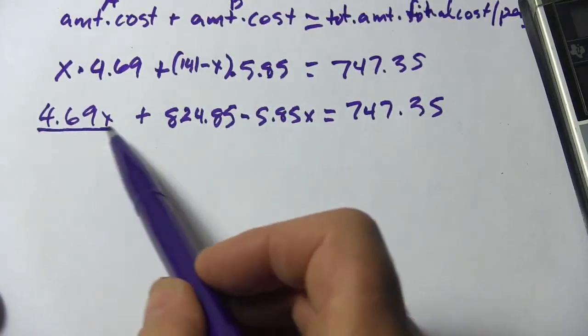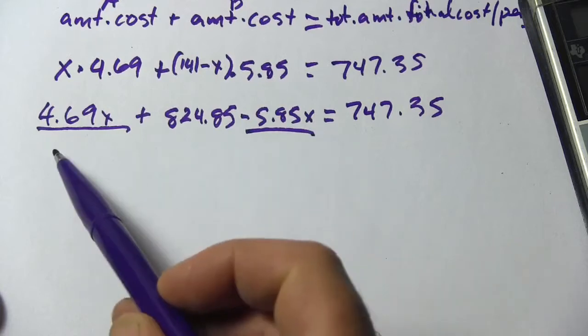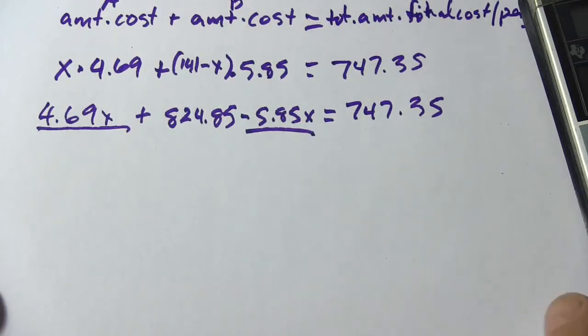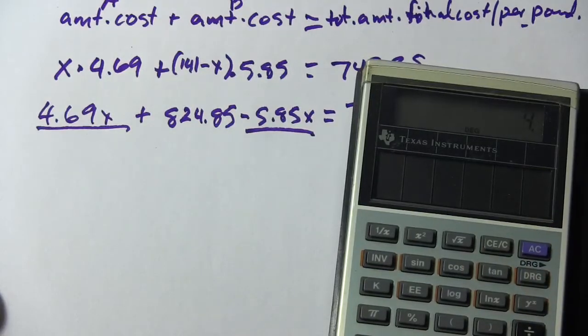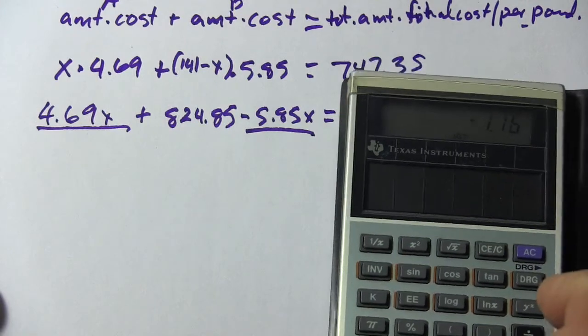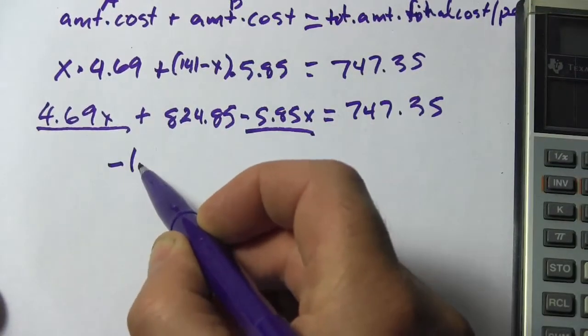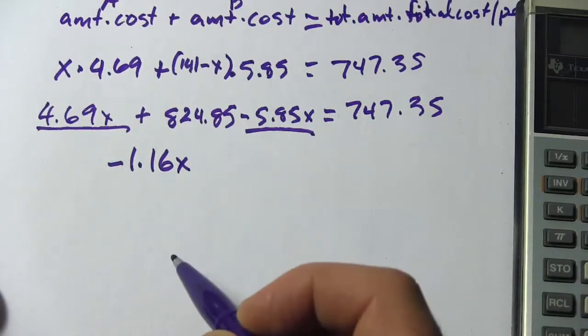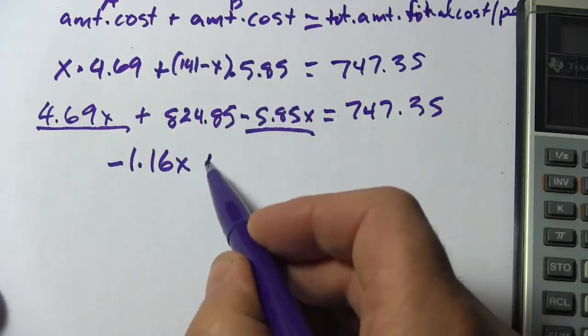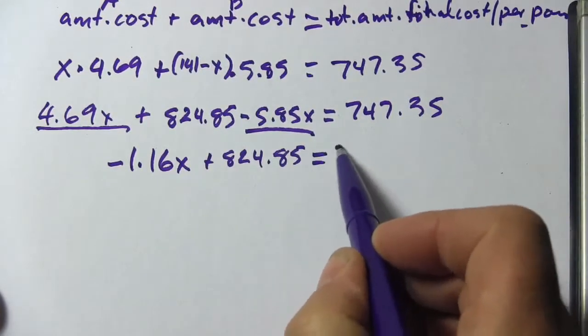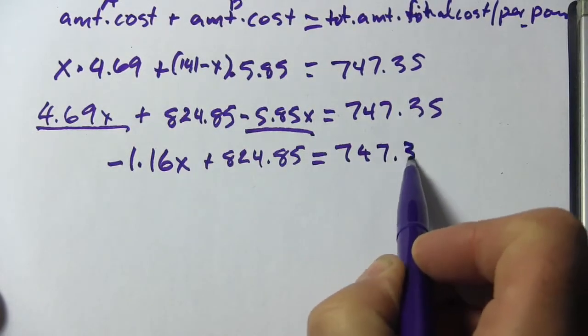We've distributed. Now we need to combine like terms. We've got this and this. So 4.69 and a negative 5.85. So 4.69 minus 5.85, and we're going to get a negative 1.16X. And then we've got our plus 824.85 equals 747.35.